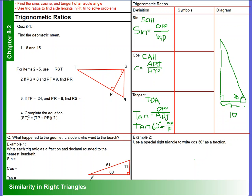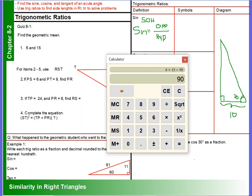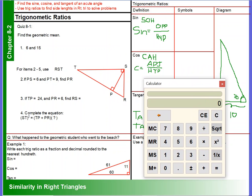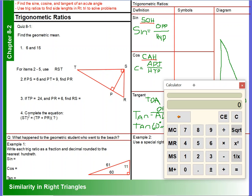Example one: write each trig ratio as a fraction and a decimal rounded to the nearest hundredth. So I'm going to pull up my calculator. We have the not-so-famous Pythagorean triple here, the 11-60-61. And again, we know that we have SOH CAH TOA.